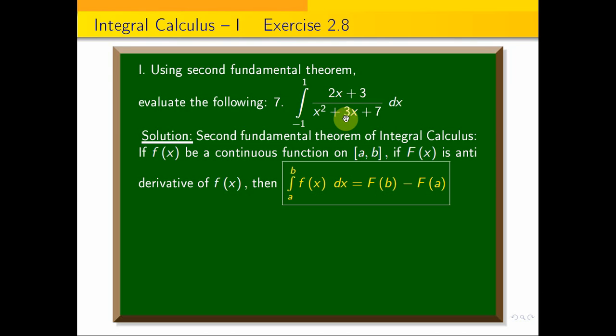We can't directly integrate it, so we'll simplify using substitution method. First think about substitution method: let x² + 3x + 7 equal t, then differentiate.